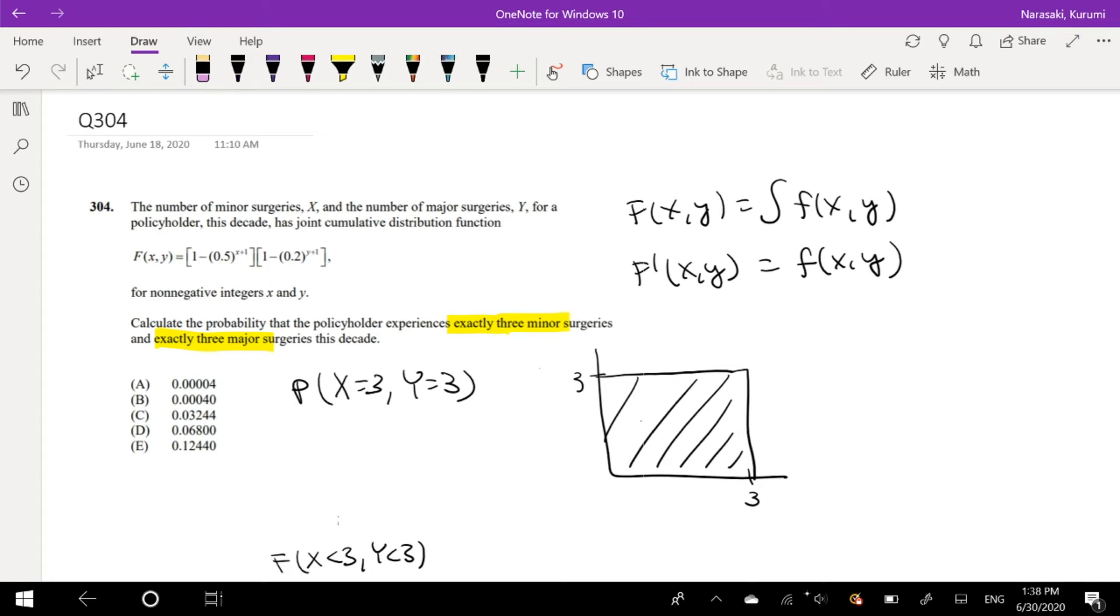So then how do we do that? Well remember in other videos where if I had a CDF of a single variable and I want to find exactly 3, I'll take F(3) and subtract F(2), right? Because if I subtract 2, that leaves me with 3, which is exactly 3, which is what I need. So the same idea kind of happens here.